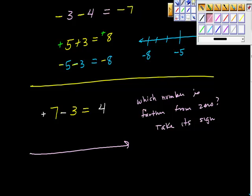So I look, I'm like, here's 7 out here. Here's 0 here. And then here's negative 3. Which number is farther from 0? And you're right, it's the positive 7. So whichever number is farther from 0, you take its sign. So positive is how I got this positive.